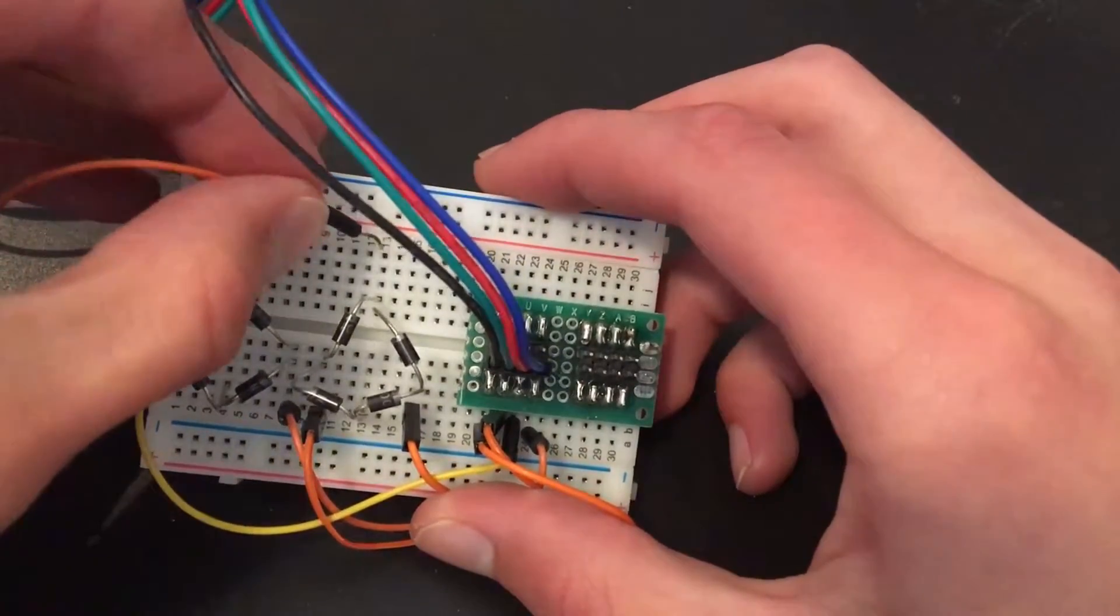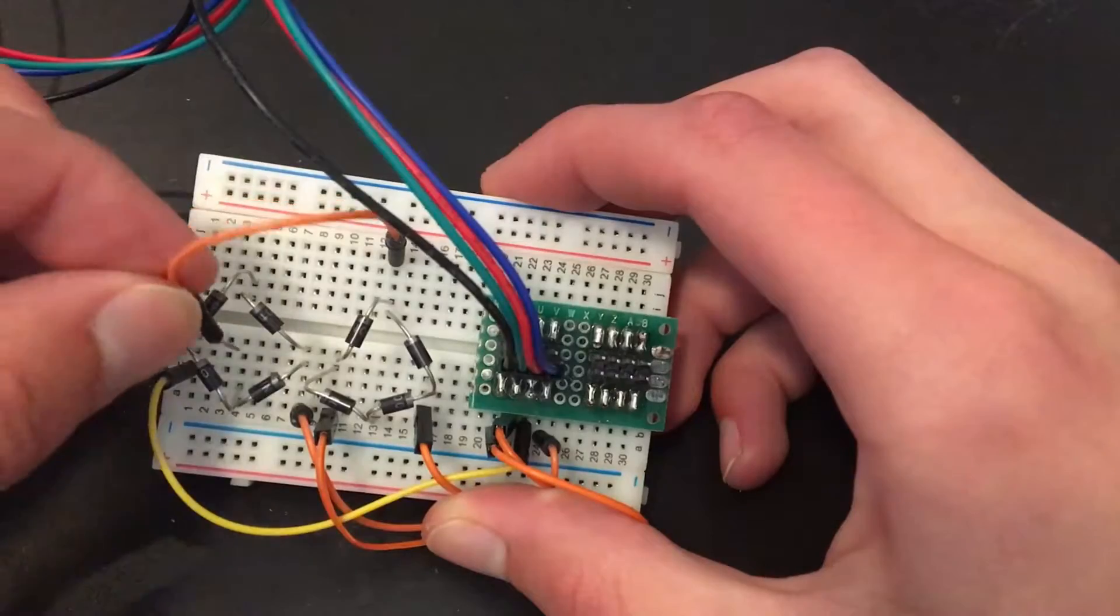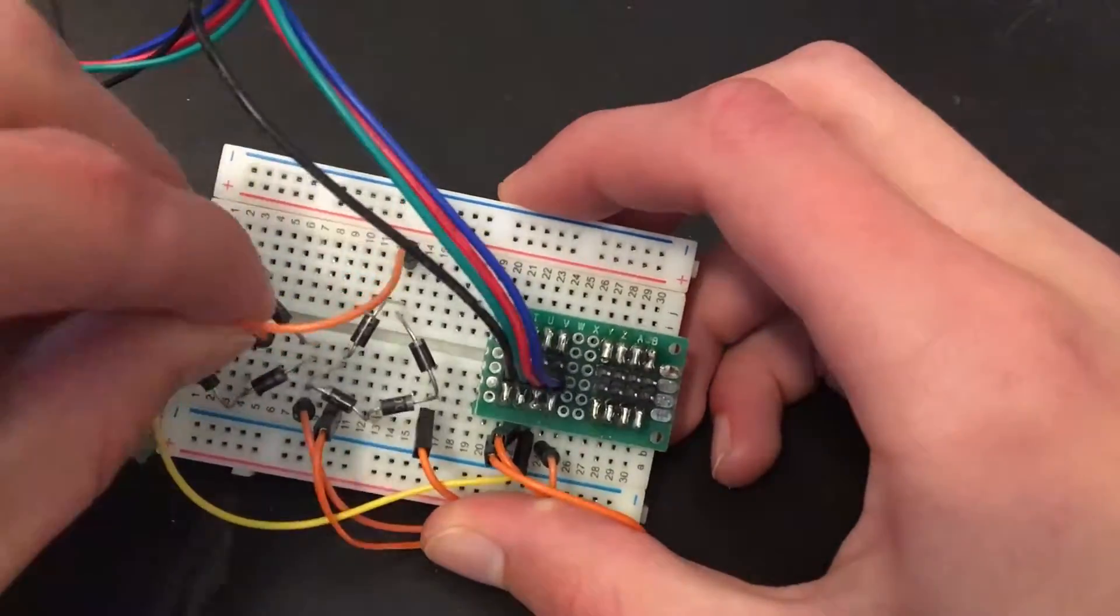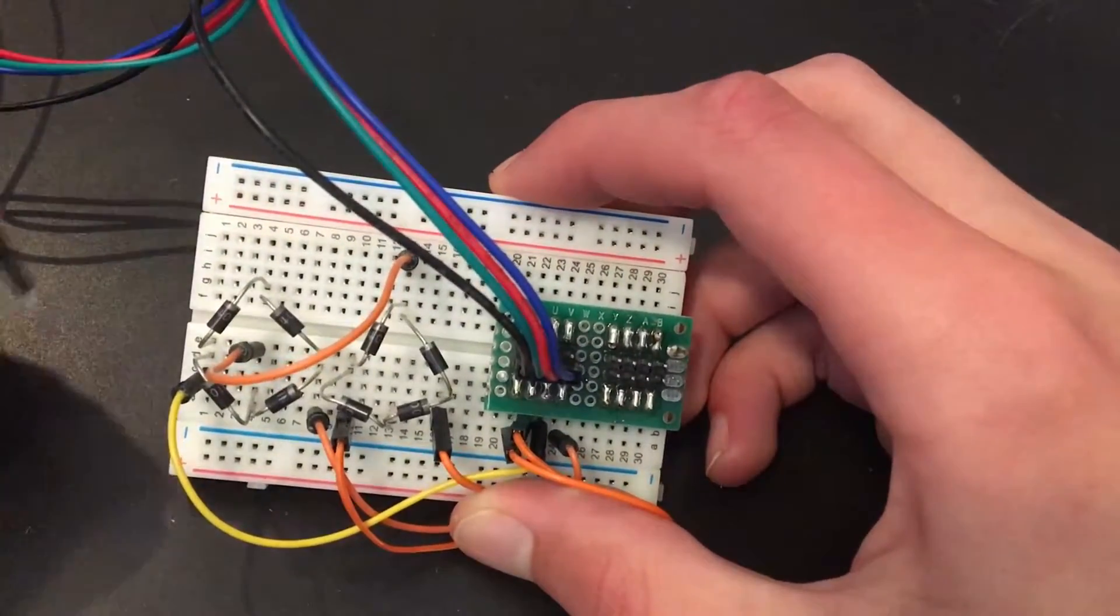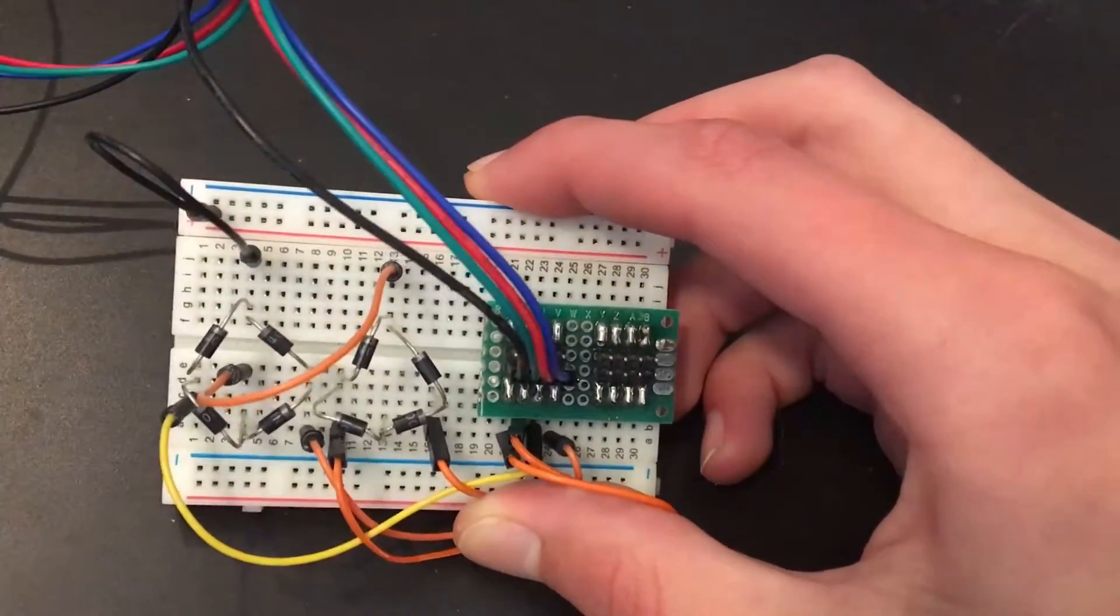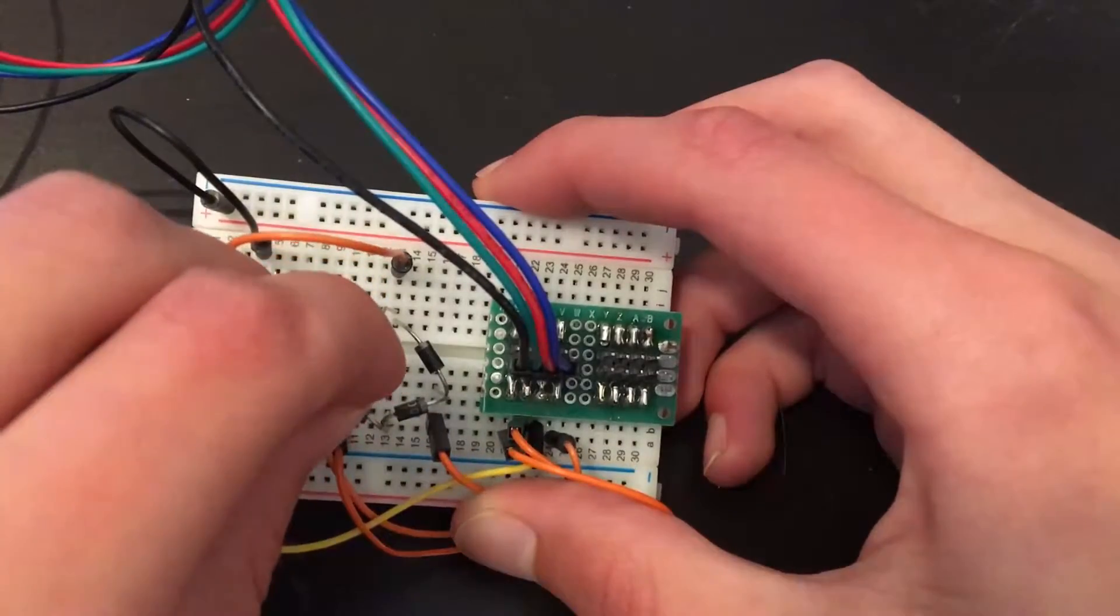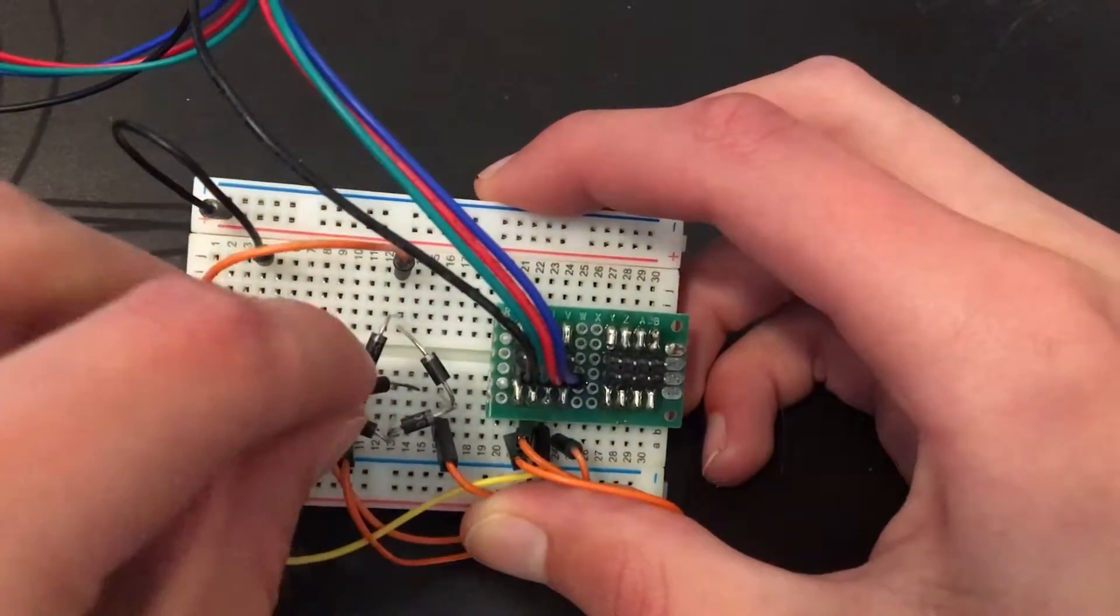Now we take the output of the first bridge rectifier and feed it to the negative of the second one. The second rectifier's output goes to the positive rail on the breadboard, and the negative of this first rectifier goes to the negative rail of the breadboard.